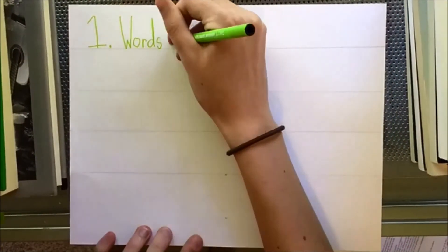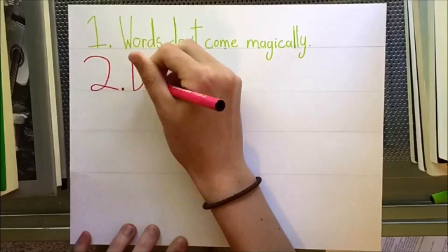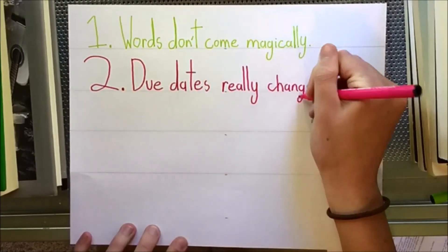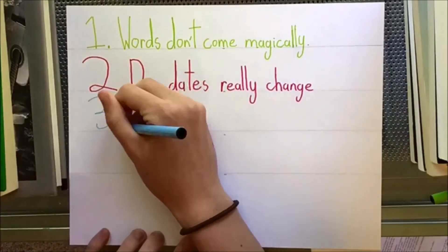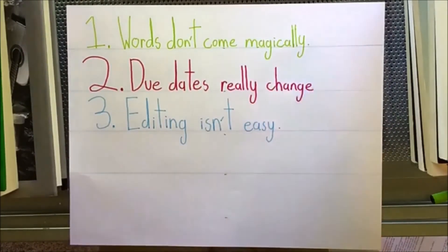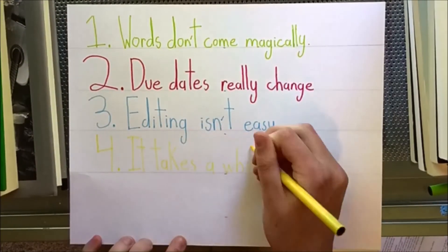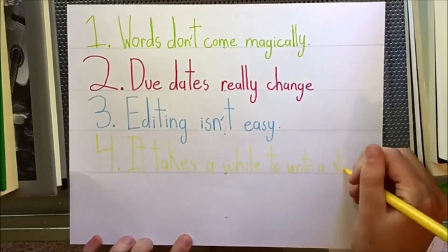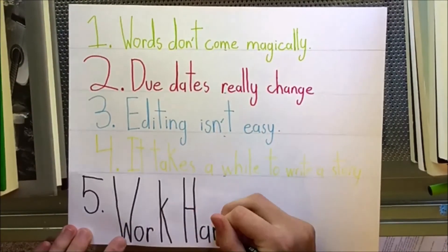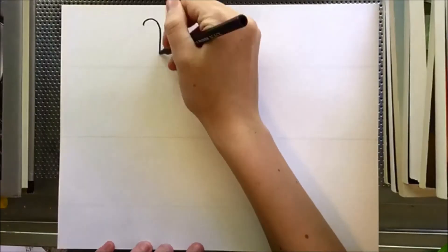The lessons I learned: One, words don't come magically. Two, do dates really change? Three, editing isn't easy. Four, it takes a while to write a story. Five, work hard — nothing goes as planned.